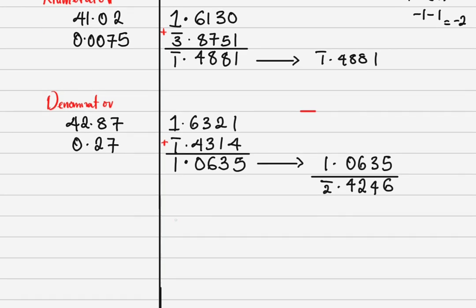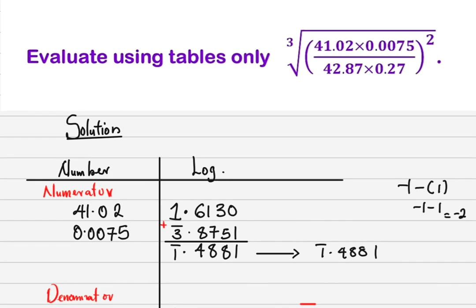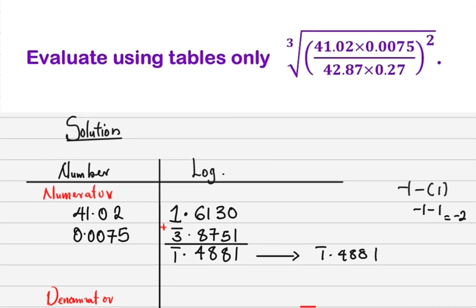Now, the numerator and denominator have been squared. The rule for powers is: multiply the log by the power. So I multiply bar 2.4246 by 2. Working it out: 2 times 6 is 12, write 2 carry 1; 2 times 4 is 8 plus 1 is 9; then 4; then 8; and 2 times minus 2 is minus 4, which is bar 4. So I have bar 4.4892.